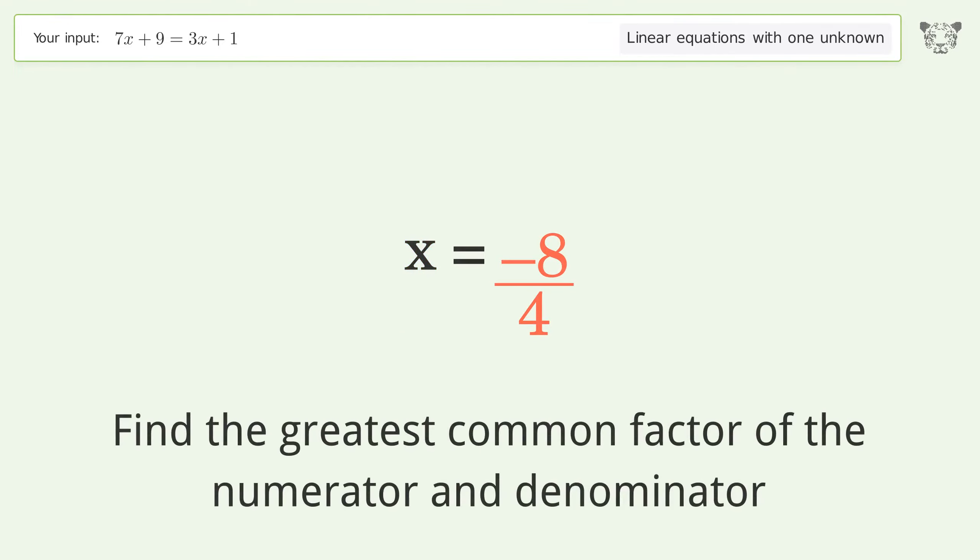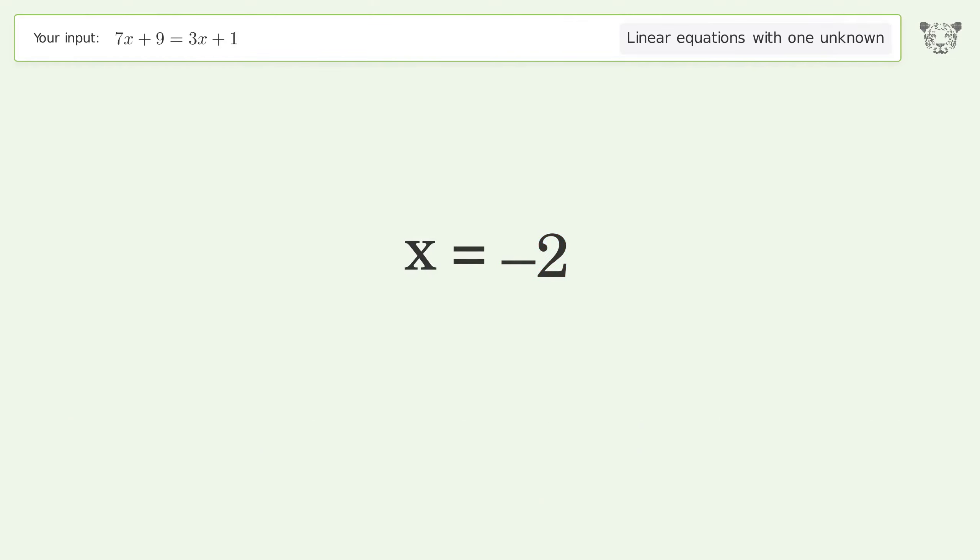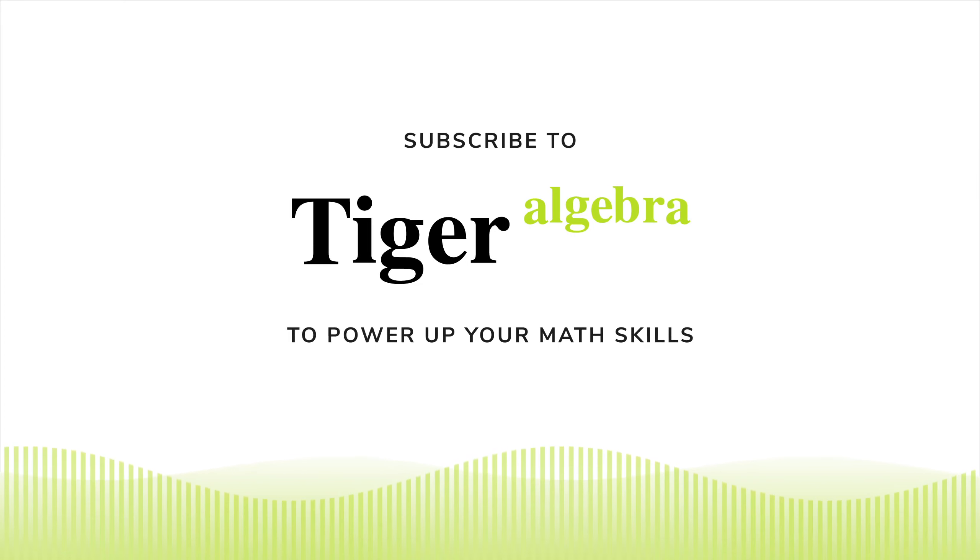Find the greatest common factor of the numerator and denominator. Factor out and cancel the greatest common factor. And so the final result is x equals negative 2.